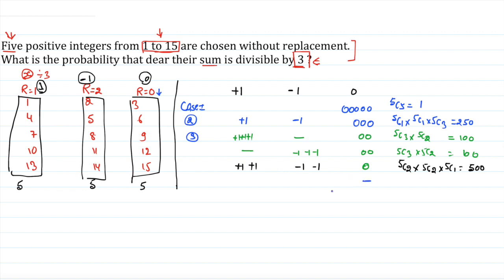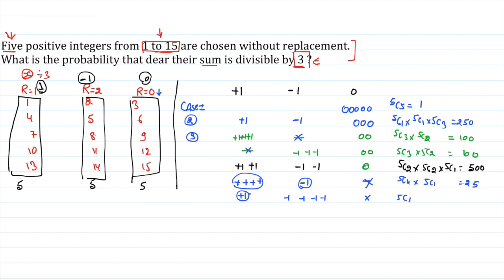In Case 5, we take no multiples of 3. We need 5 numbers from only +1 and −1 categories summing to a multiple of 3. One sub-case is four +1s and one −1: 5C4 × 5C1 = 5 × 5 = 25. The alternate sub-case is one +1 and four −1s: 5C1 × 5C4 = 25. Total for Case 5 is 50.